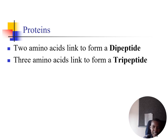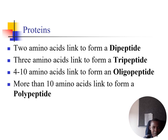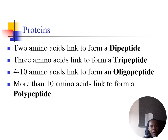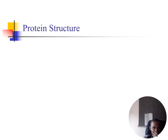More than ten amino acids linking together form what you call a polypeptide. Proteins in the body and in the diet are long polypeptides — the proteins that make up the body are polypeptides. Polypeptides are long chains of amino acids.